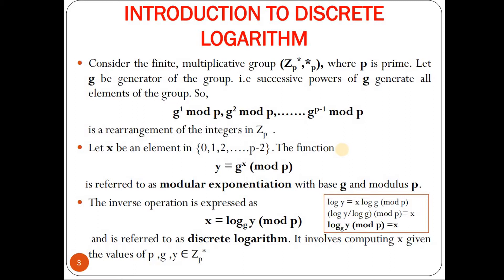Consider the finite multiplicative group Z* P on multiplication modulo P where P is prime. Let G be the generator of the group — the successive powers of G generate all elements: G^1 mod P, G^2 mod P, up to G^(P-1) mod P, all in Z* P. Let X be an element in {0,1,...,P-2}. The function Y = G^X mod P is modular exponentiation with base G and modulus P. The inverse operation X = log_G(Y) mod P is referred to as discrete logarithm.